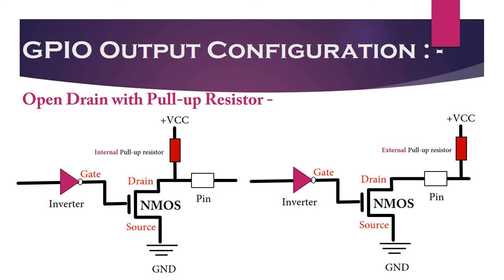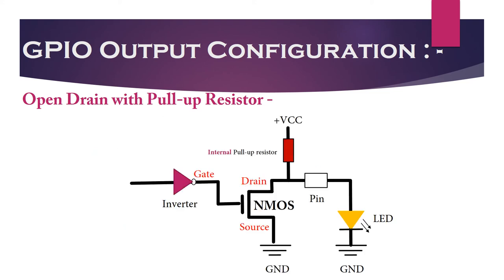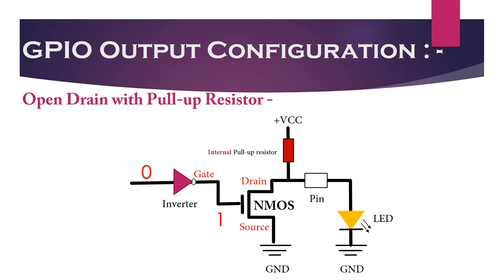Let's try to understand open drain configuration with pull-up resistors by operating an LED. If we write 1, the NMOS transistor will be turned off, and the LED will be pulled to VCC and hence will be turned on. If we write 0, the NMOS transistor will be turned on and the LED will be pulled to ground and hence will be turned off. By this way we can control the output of an open drain configuration. We had also discussed this configuration while talking about I2C protocol — check out that video for more information.